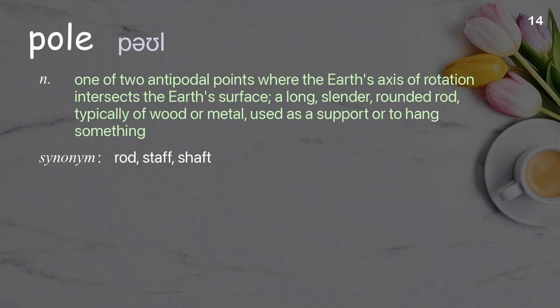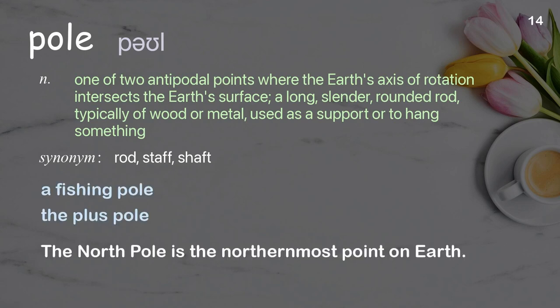Pole: one of two antipodal points where the Earth's axis of rotation intersects the Earth's surface; also a long, slender, rounded rod, typically of wood or metal, used as a support or to hang something. Examples: a fishing pole, the plus pole, the north pole. The north pole is the northernmost point on Earth.